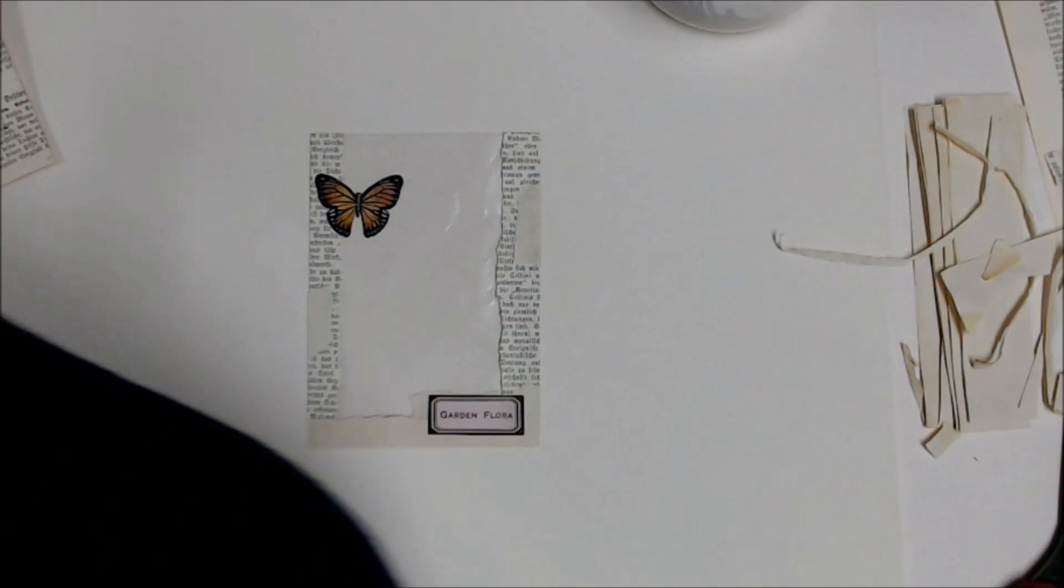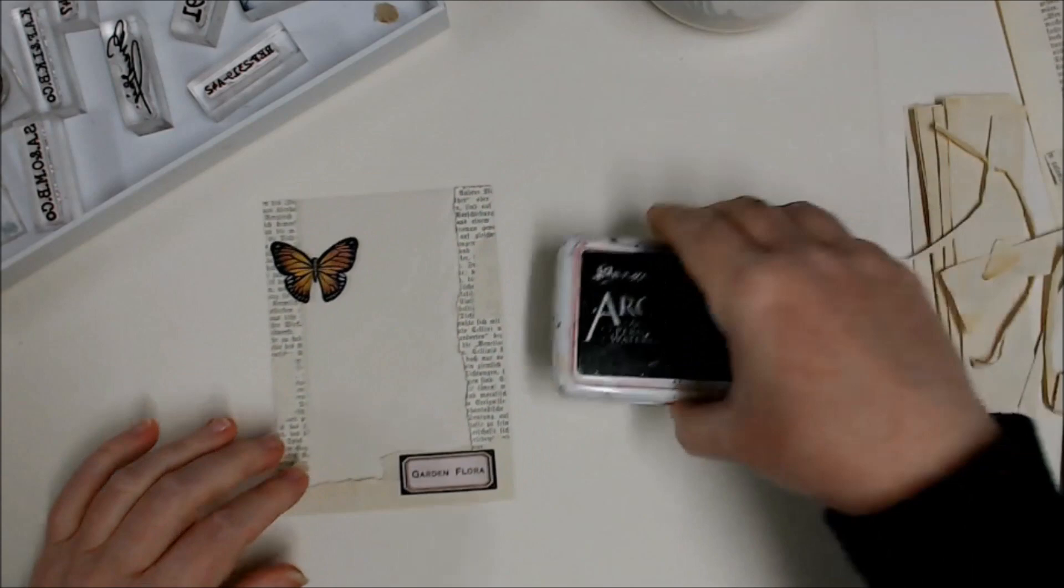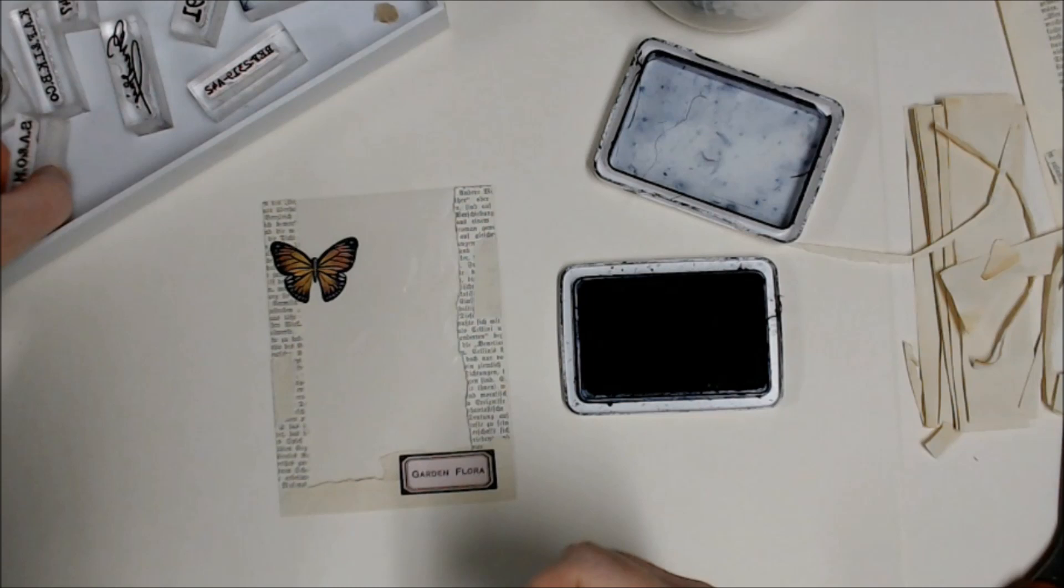So now I have my pocket like this. Now I want to add a little bit more embellishing on here. If you stamp with an archival permanent ink, you can actually stamp straight onto the cellophane bag.